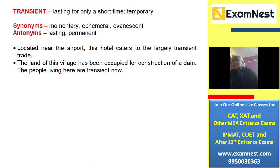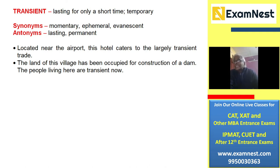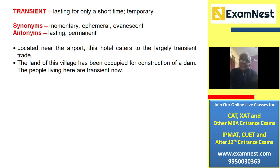The antonyms for transient would be lifelong, continuing, durable, permanent, imperishable, indestructible, ceaseless, incessant, dateless, deathless, eternal, endless, everlasting, immortal, long-lived, perpetual, timeless, undying, unending. They would be the antonyms of transient.